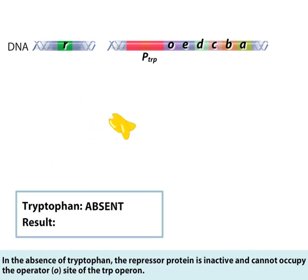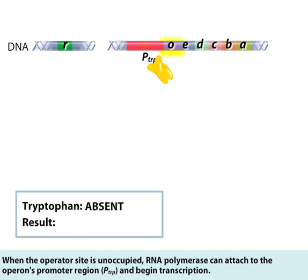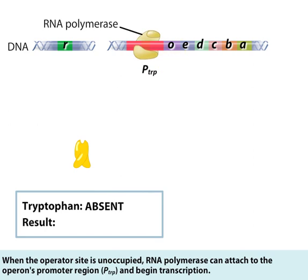the repressor protein is inactive and cannot occupy the operator site of the TRP operon. When the operator site is unoccupied, RNA polymerase can attach to the operon's promoter region, indicated by P-sub-TRP, and begin transcription.